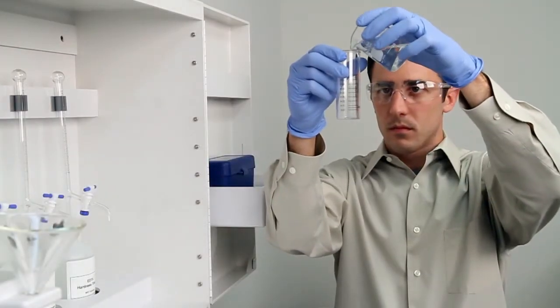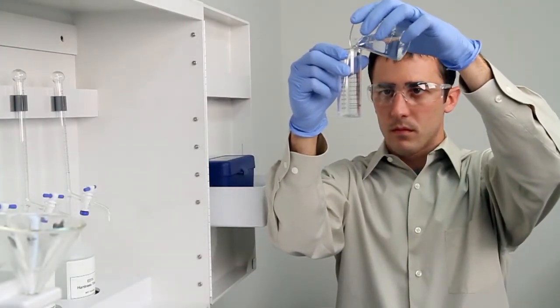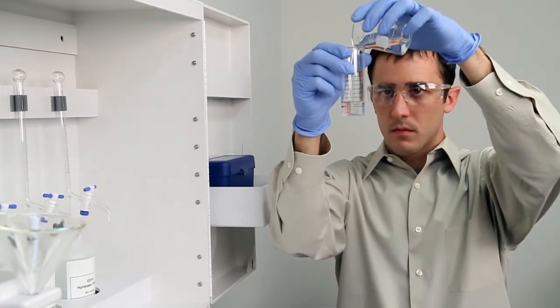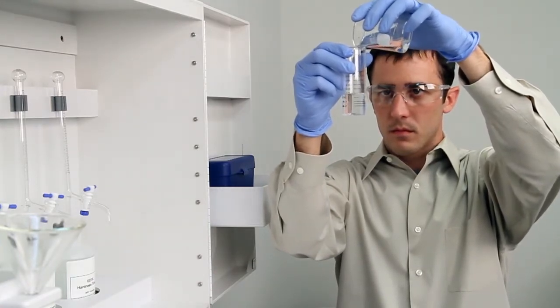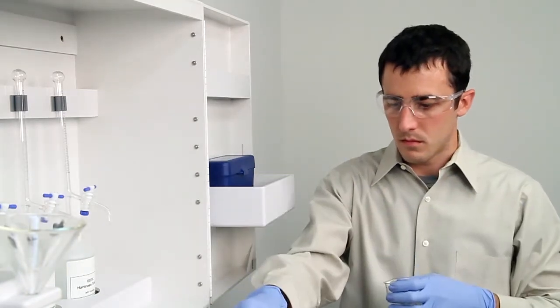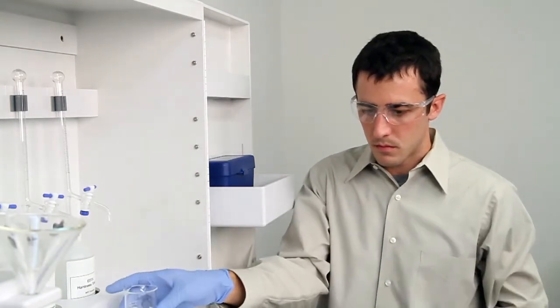To get an accurate sample, hold the vial close to eye level. Accuracy is very important during this step. Once you feel you have an accurate sample, place the vial on a level surface and bend down to eye level to verify.